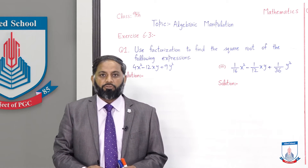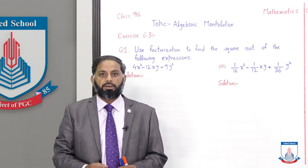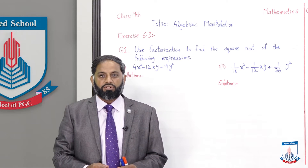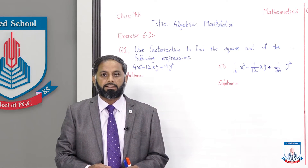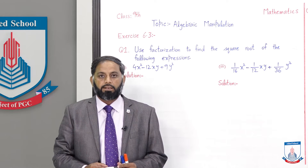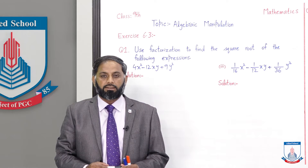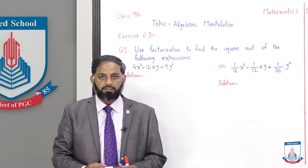हमने square root find करना है factorization की help से। जब भी हमने factorization से square root find करना होगा, तो given expression (a+b)² बनेगा या (a-b)² बनेगा। तो (a+b)² या (a-b)² complete करने के बाद हम square root लेंगे तो हमें final result मिल जाएगा।